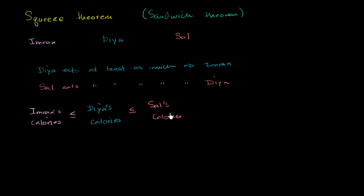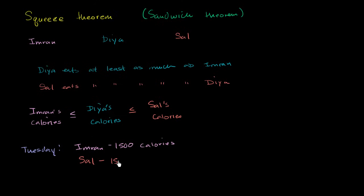Now let's say it's Tuesday. On Tuesday, you find out that Imran ate 1,500 calories, and on that same day, Sal also ate 1,500 calories. So how many calories must Dia have eaten? Well, she always eats at least as many as Imran, so she ate 1,500 or more. But she always eats less than or equal to Sal's amount, so it must be less than or equal to 1,500. There's only one number that satisfies both conditions, and that is 1,500 calories.